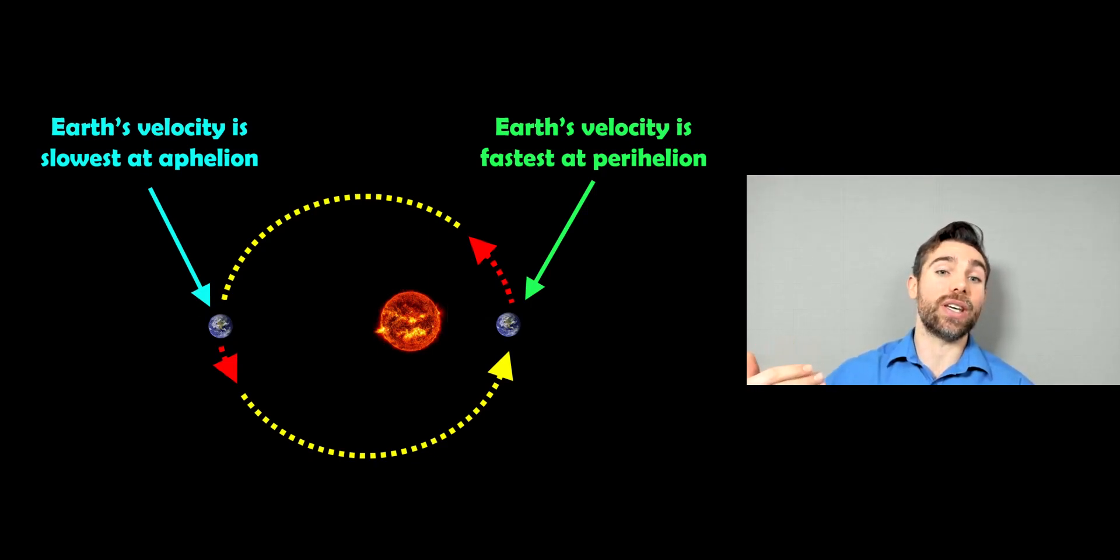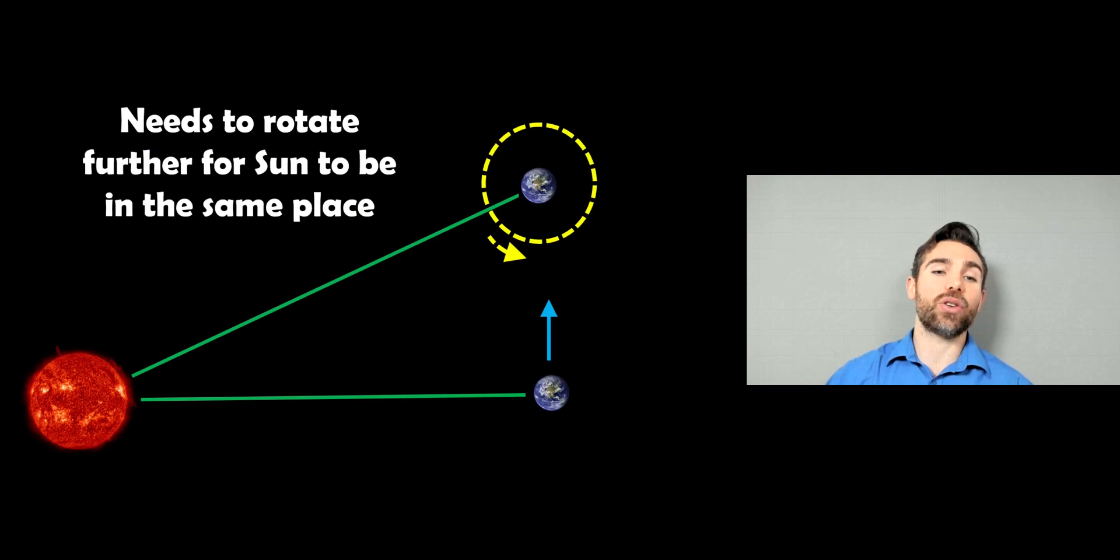Now, when we then look at the synodic period or the solar period, so to get the Sun in the same place in the sky again, it's actually got to rotate further because it's orbiting the Sun. And at that location, it's travelling faster. So it's actually travelled further. So the Earth has to rotate that a little bit more just to put the Sun in the same location again.